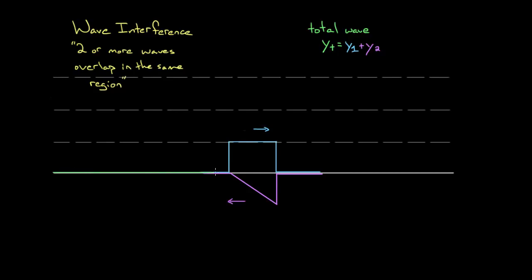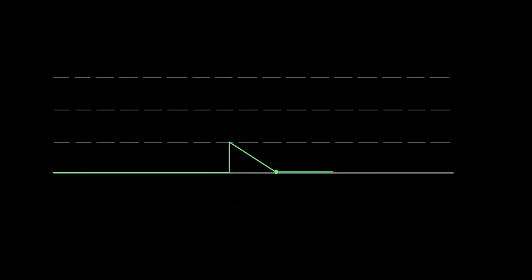Zero plus zero over here is easy. At this point the blue wave's value is one and the pink wave is zero, so that's one. Over in the overlapping region, the blue wave is one and the pink wave drops down to negative one, so one plus negative one is zero. What happens in between? Consider a point in the middle: the blue wave is one, the pink wave is negative one-half, so the total is positive one-half. At another point, the blue wave is one and the pink wave is negative three-fourths, giving positive one-fourth. That's why the total wave drops down linearly — the pink wave takes a bigger and bigger bite out of the blue wave. That's what the total wave looks like when these two overlap.